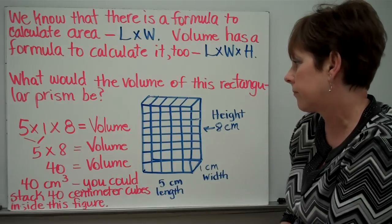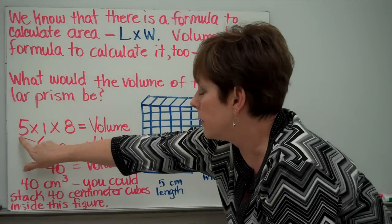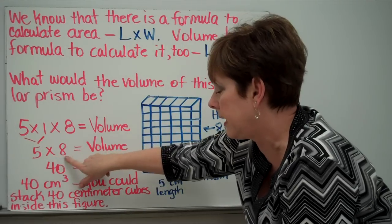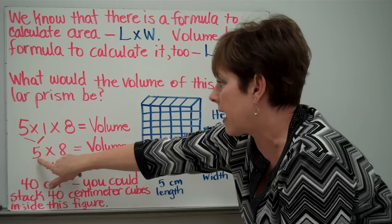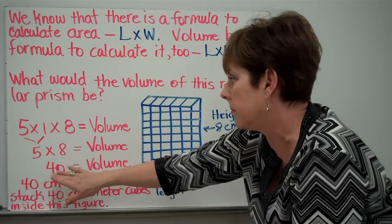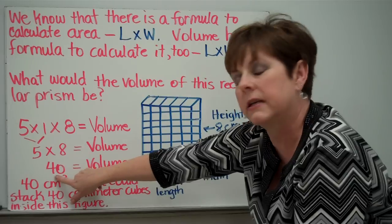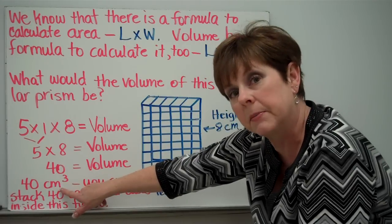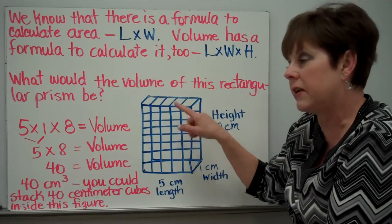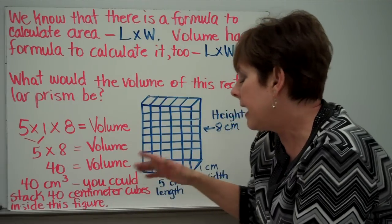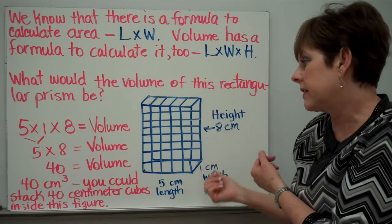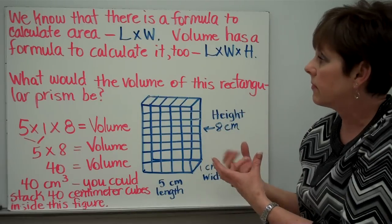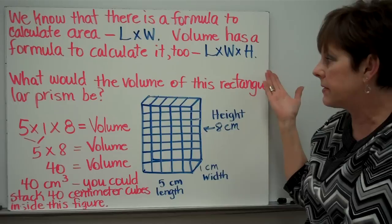We could do the first two. Five times one is five. We could then say five times eight would be our volume. And that five times eight is forty. We would express it as forty cubic centimeters, because it's measured in centimeters. And these are all cubes. In other words, you could stack forty centimeter cubes inside of this figure to show how much it would hold. That's volume. Length times width times height.